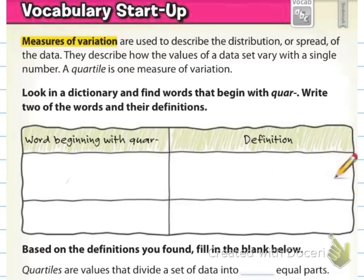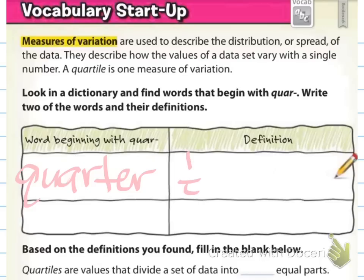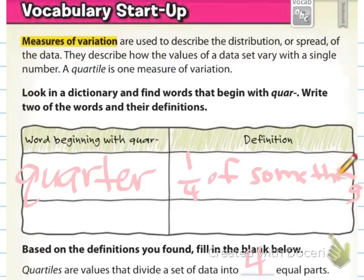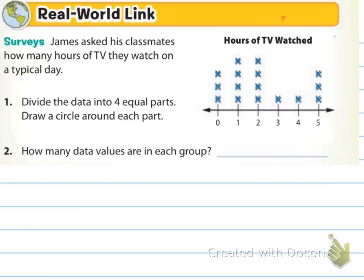It says look in a dictionary and find words that begin with 'quarr' (q-u-a-r) and write two words with their definitions. I think we can agree 'quarter' is a good one: a quarter is one-fourth of a dollar, a quarter in a football game is one-fourth of the total game. So one-fourth of something is a quarter. Based on that, fill in the blank: quartiles are values that divide a set of data into four equal parts.